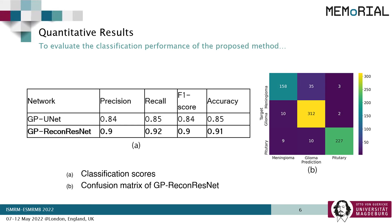Now let's have a look at the results, starting with the classification results. The proposed GP ReconResNet obtained 91% accuracy and an F1 score of 0.9. In comparison, the GP unit model obtained an accuracy of 85% and an F1 score of 0.84. On the right-hand side, we can see the confusion matrix of the GP ReconResNet model, and it can be said that the model achieved good classification performance.